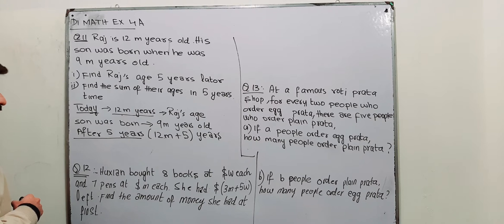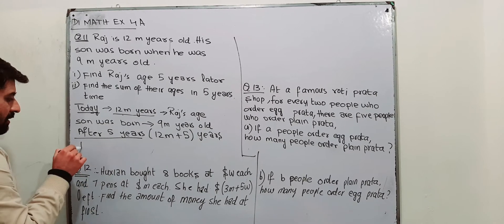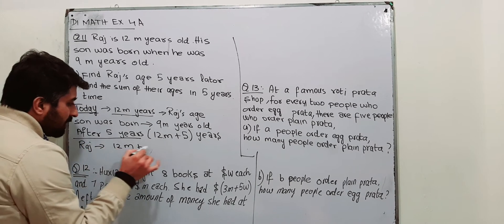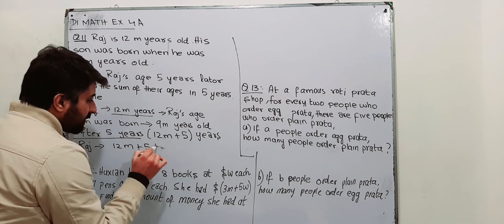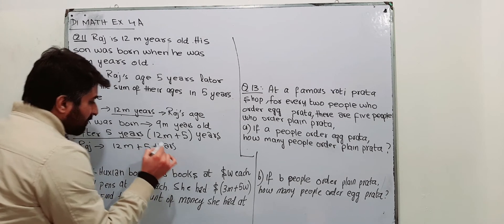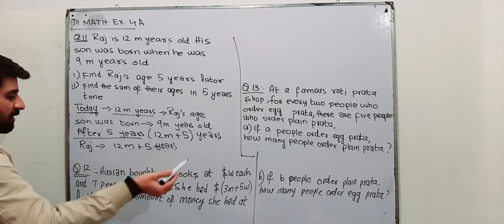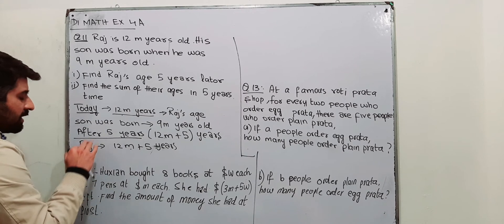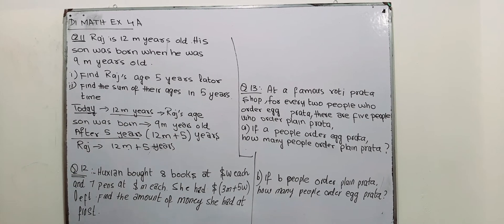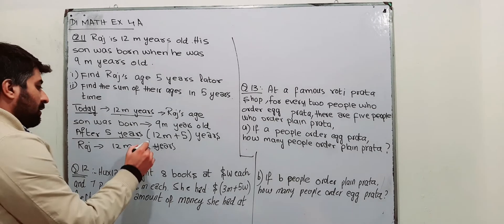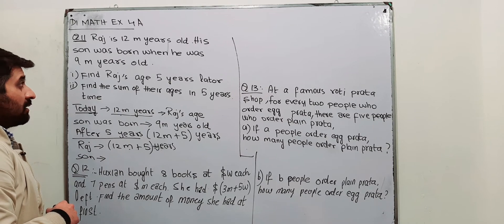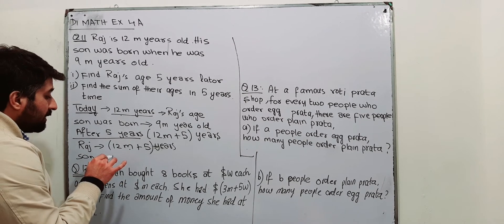Part 2 is: find the sum of their ages in 5 years' time. In 5 years' time — that means after 5 years — Raj is 12m plus 5 years. After 5 years, today Raj is 12m years old; after 5 years you simply add 5 to 12m, so Raj's age after 5 years is 12m plus 5. Now, what about his son? His son today is 3m years old.